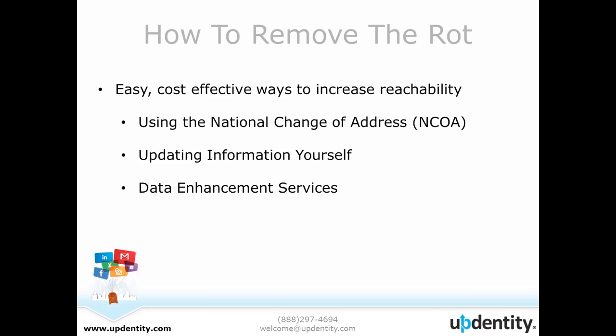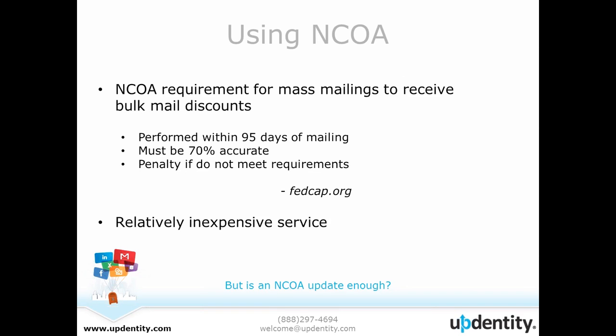You know that you have rot in your database and you need to know what to do about it. Before I move along about how to remove the rot and some really easy and cost-effective ways to increase reachability, does anybody have any questions about data rot? I'll go ahead and talk about some of these cost-effective ways — some of the more common things that people are doing to get rid of data rot. I'd like to talk about NCOA — that's the National Change of Address — updating information yourself, and utilizing data enhancement services. Let's first start talking about the NCOA. It's a requirement for mass mailings in order to receive any kind of bulk mail discounts.